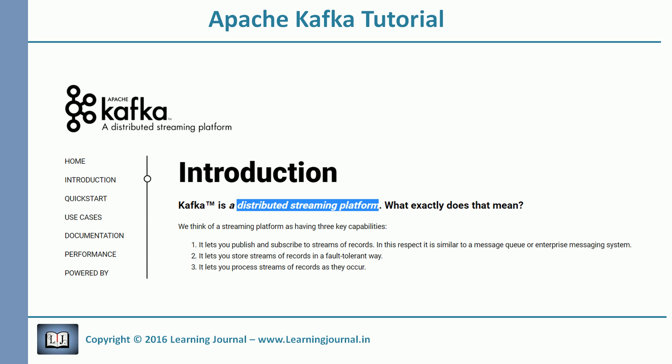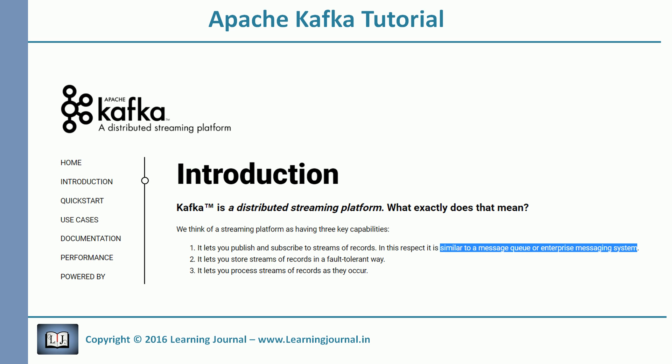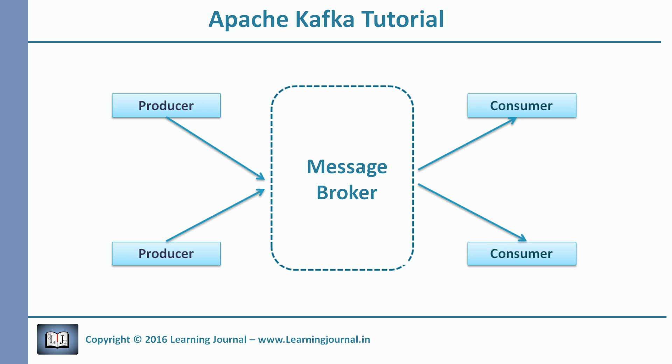The Kafka documentation says it is a distributed streaming platform. I want to know what it can do for me, and the official documentation says it is similar to an enterprise messaging system. In a typical messaging system there are three components: a producer or publisher, a broker, and a consumer. Producers are client applications that send messages. Brokers receive messages from publishers and store them. Consumers read the message records from brokers. All of this looks very simple.